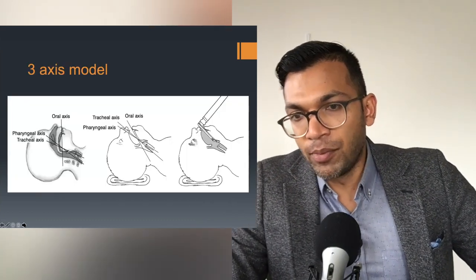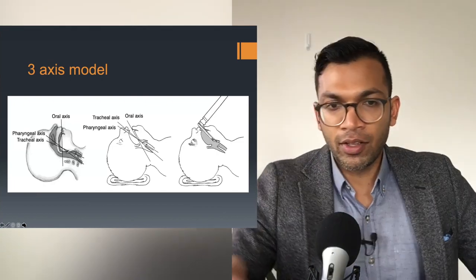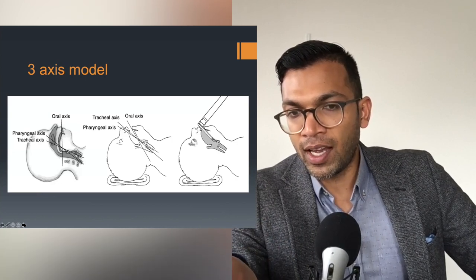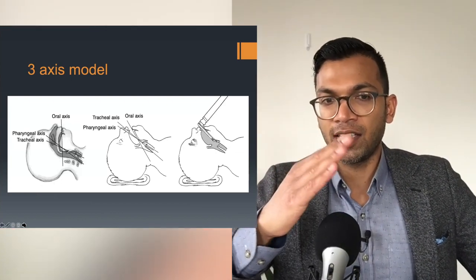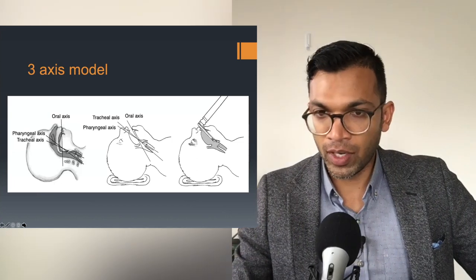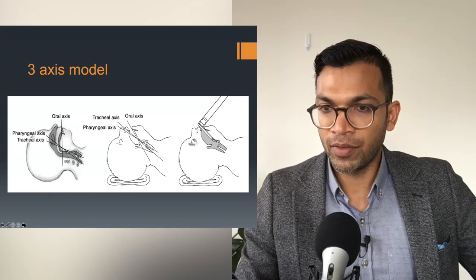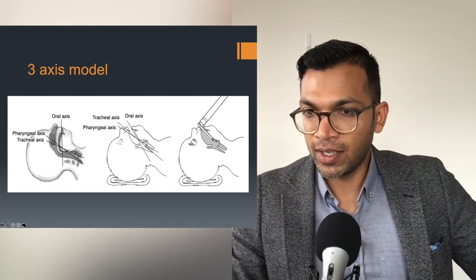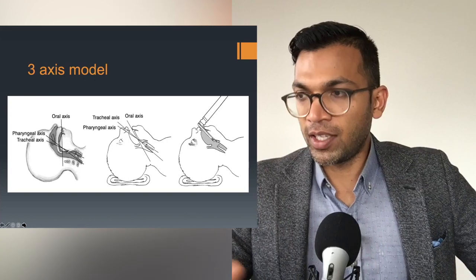The three-axis model: oxygenating a patient means getting oxygen through the mouth, past the almost right-angle curve of the oropharynx, down through the trachea into the lungs. The oral axis goes straight back, the pharyngeal axis is at one incline, and the tracheal axis at another — these don't line up. When you bag mask a patient you need to create positive pressure with a seal to get air around that curve; a Guedel helps if the tongue obstructs. With an LMA you bypass that curvature.